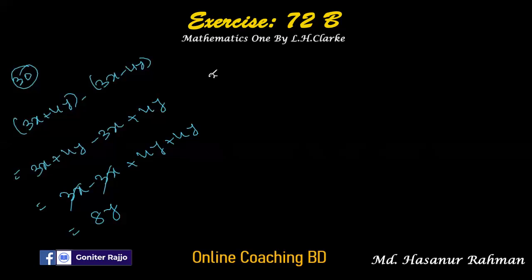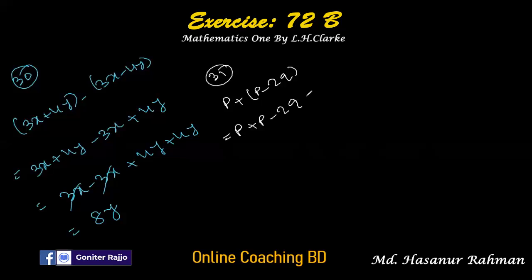Number 31 says p plus p minus 2q. So p plus p minus 2q gives 2p minus 2q.